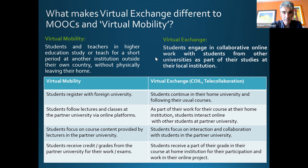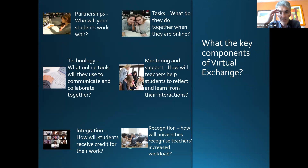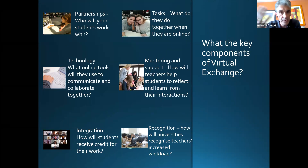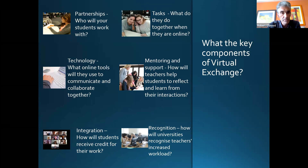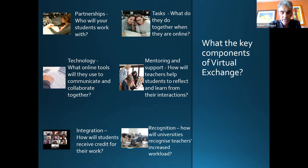Now, what are the key components of virtual exchange? If you're a teacher interested in running one, what are the main things to keep in mind? First: partnerships. Who will your students work with? You'll need to find a partner class in another country. Many teachers do that through their own academic networks — people they know from conferences teaching the same subject in other countries. Organizations like UniCollaboration also have a partner search tool. If your university belongs to an international network like the Utrecht Network or the Coimbra Group, that can also be a good way to find partners.